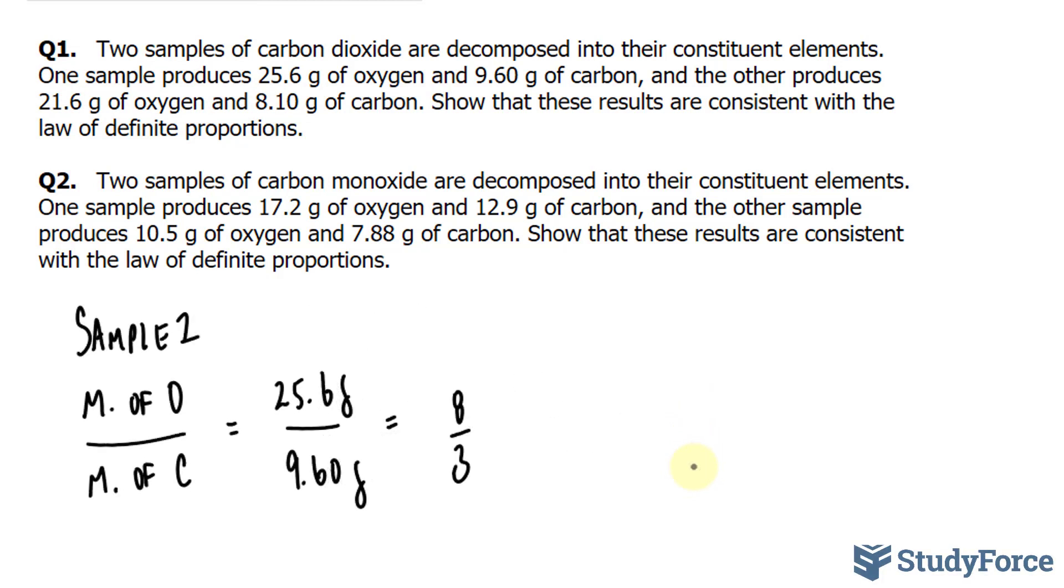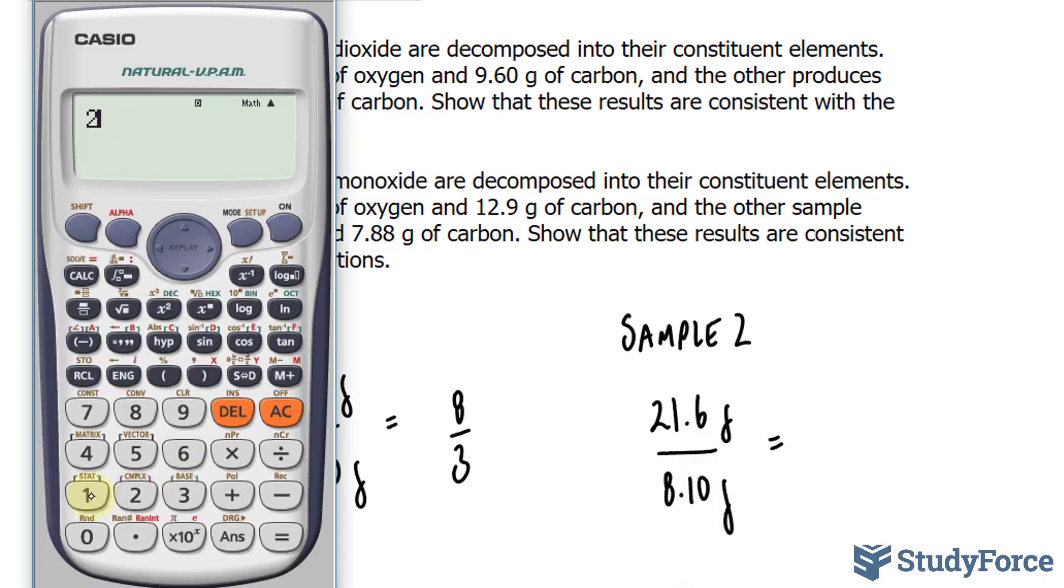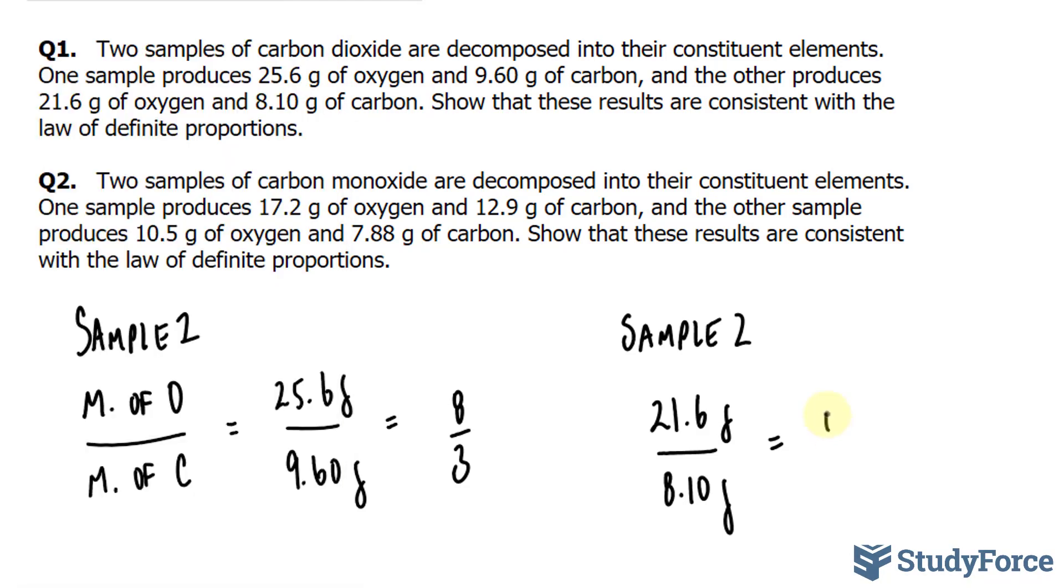Now let's find the ratio for the second sample. We have 21.6 grams over 8.10 grams. Using our calculator, 21.6 divided by 8.10, this gives us 8 over 3. Therefore, this proves the law of definite proportions. Let's move on to question two.